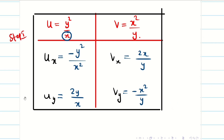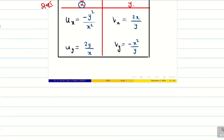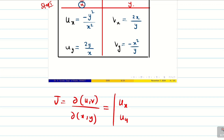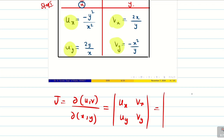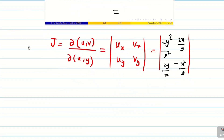Step 2: compute the Jacobian from the table. The Jacobian J = ∂(u,v)/∂(x,y) is a 2×2 determinant with entries ux, uy, vx, vy. This is a convenient form — we simply copy the data from the table. The matrix is: [−y²/x², 2y/x; 2x/y, −x²/y²]. Now expand the determinant to get the answer.